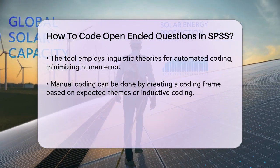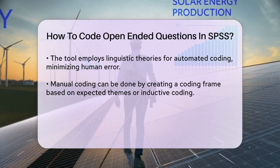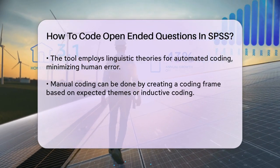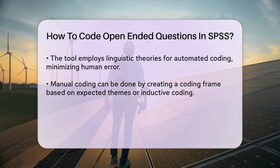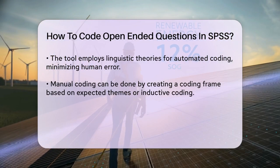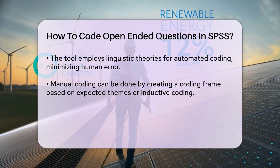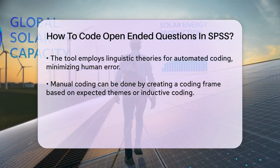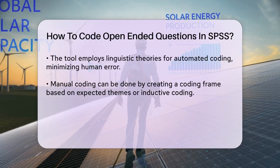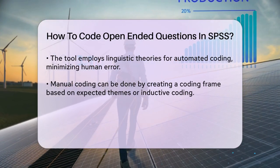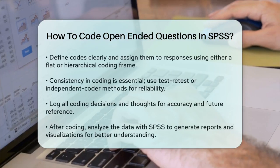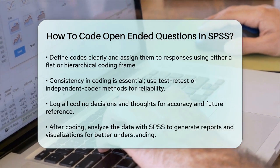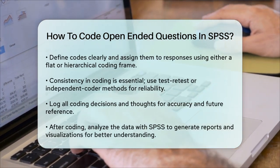Ensuring Consistency: Consistency is key when coding open-ended questions. To ensure this, you can use the test-retest method or the independent coder method. In the test-retest method, the same person codes the data twice without looking at the previous results. In the independent coder method, a second coder works on the same survey, and then the results are compared for consistency.